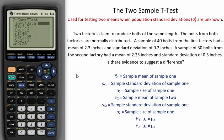First we can enter in the mean for factory one, and next the standard deviation for factory one, and finally the sample size for factory one.